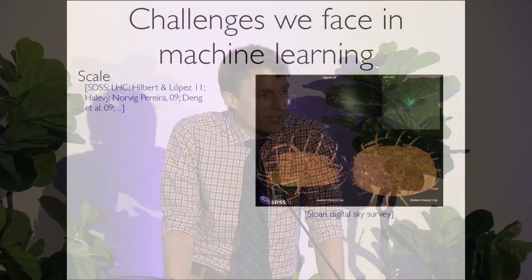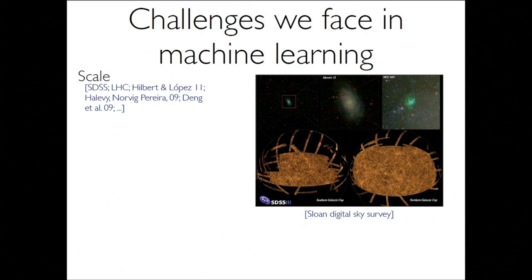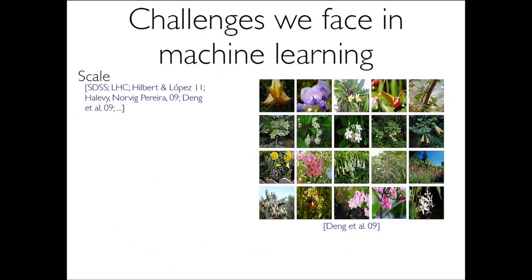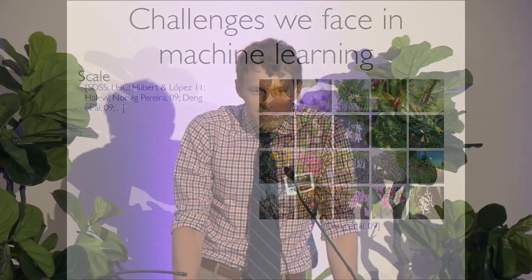Scale — a huge challenge. The Sloan Digital Sky Survey in the first month of its existence had collected more data than the sum of all previous astronomical experiments. Fei-Fei's group, as you saw, has been generating these gigantic image data sets. How many gigabytes in ImageNet now? 15 million images. So that's big.